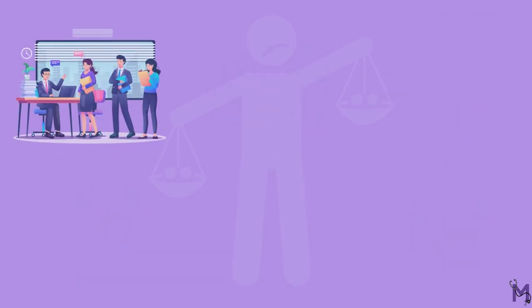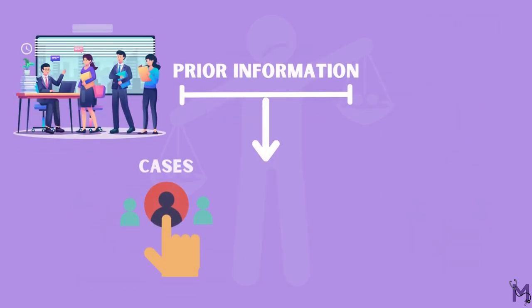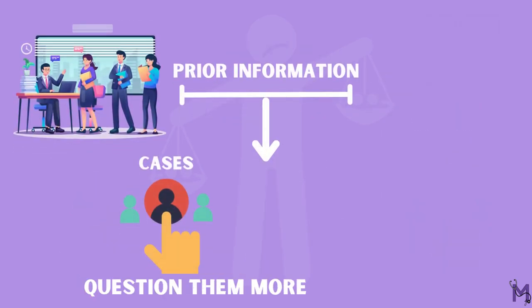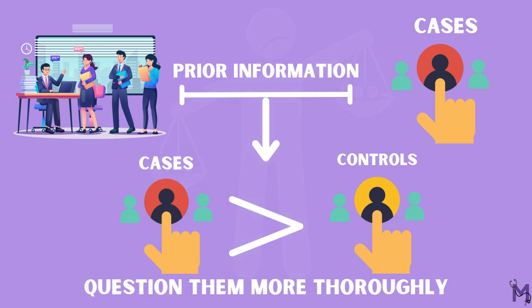If the interviewer has prior information on who the cases are, he'll question them more thoroughly than the controls regarding the positive history of the suspected causal factors. Thus, these were the five biases that may occur in a case-control study.